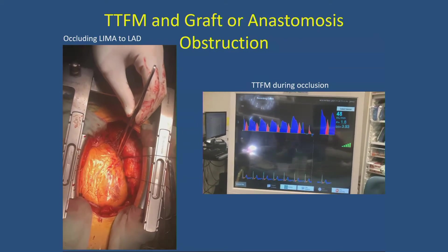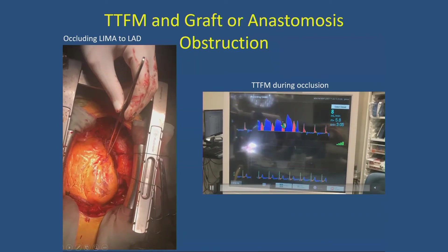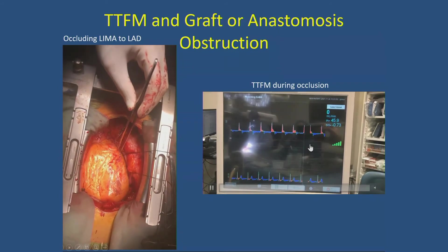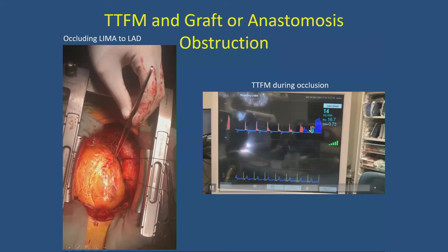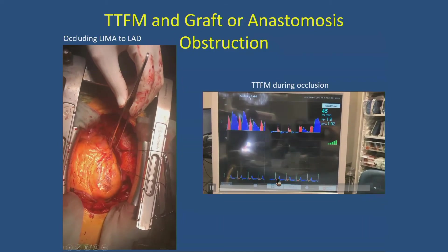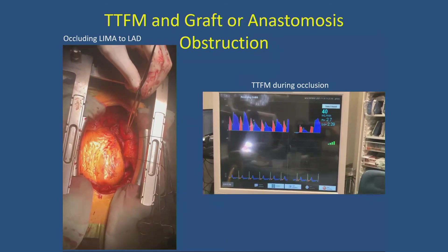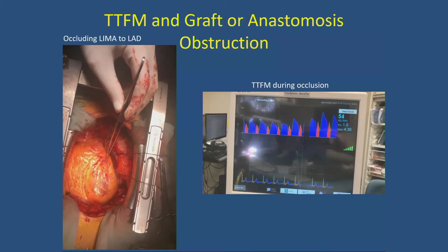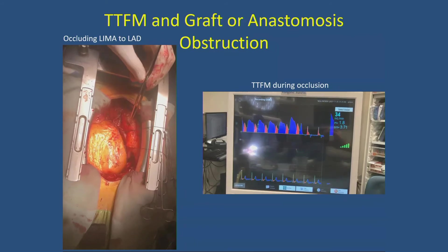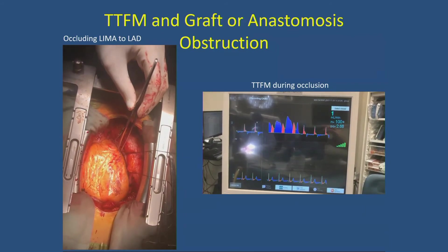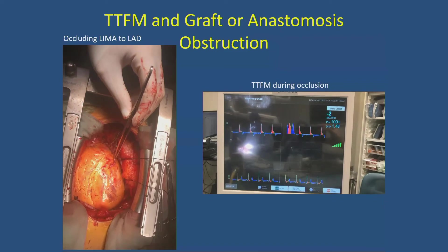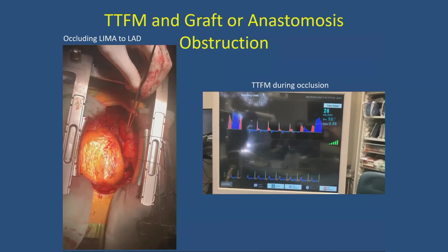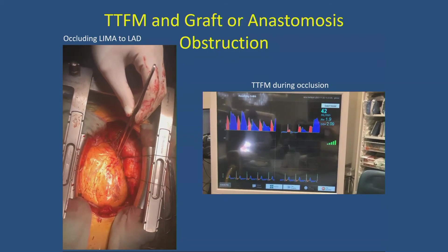Here is a patient with a left mammary to LAD. When I squeeze the graft, you can see that you only have a systolic peak. When I release the graft, you get back the diastolic part of the flow. This demonstrates that if you have a suboccluded anastomosis, what you will see on your TTFM measurement is loss of diastolic filling with only a systolic peak and a very high PI. That's what you should look for in case of doubt around the quality of the distal anastomosis.